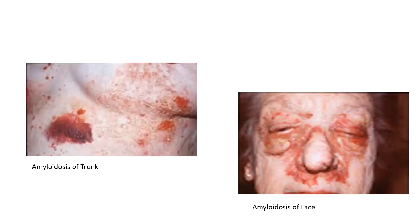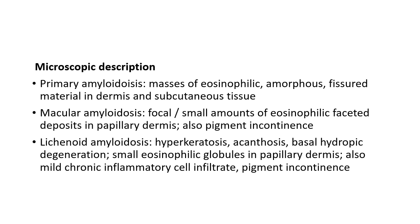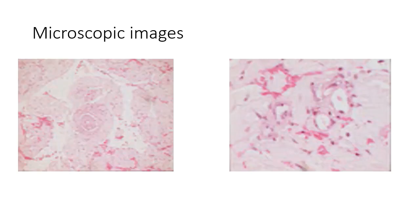Looking into the pictures of cutaneous amyloidosis, this is amyloidosis of the trunk on the left and amyloidosis of the face on the right. The microscopic description when we get a skin biopsy for amyloidosis of skin: in primary amyloidosis, there are masses of eosinophilic amorphous fissured material in the dermis and subcutaneous tissue. In macular amyloidosis, there are small amounts of eosinophilic faceted deposits in the papillary dermis, and also pigment incontinence. In lichenoid amyloidosis, there is hyperkeratosis, acanthosis, basal hydropic degeneration, and small eosinophilic globules in the papillary dermis. Mild chronic inflammatory cells are present with pigment incontinence. As you can see in the microscopic images, there are eosinophilic deposits along with chronic inflammatory cells and fissuring in the dermis.